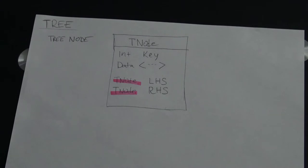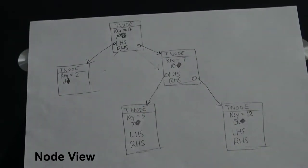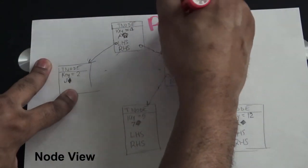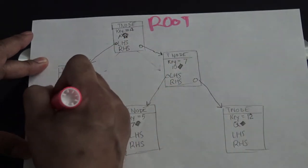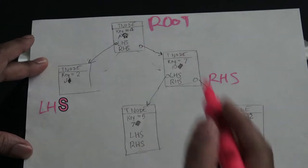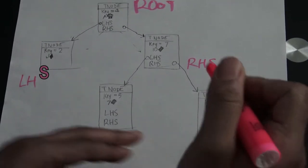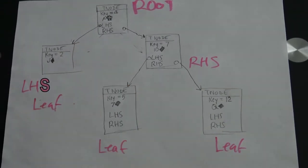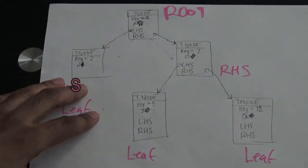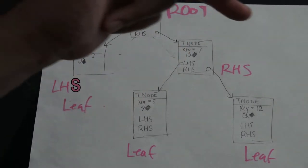Here's a good example of a tree using our card examples. The root is always at the top. These are child nodes - left hand side and right hand side. As we traverse all the way down to the child nodes, we reach what we call leaf nodes. A leaf node is a node that doesn't have any left or right child. We have key values 4, 2, 7, 5, and 12.